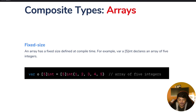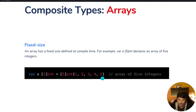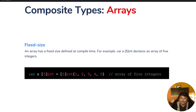Now let's learn about composite types, starting with arrays. An array has a fixed size defined at compile time. For example, 'var a [5]int' declares an array of five integers. In arrays.go, 'var o [5]int = [5]int{1, 2, 3, 4, 5}' defines an array with five integer values. Running 'go run arrays.go' prints all the values.